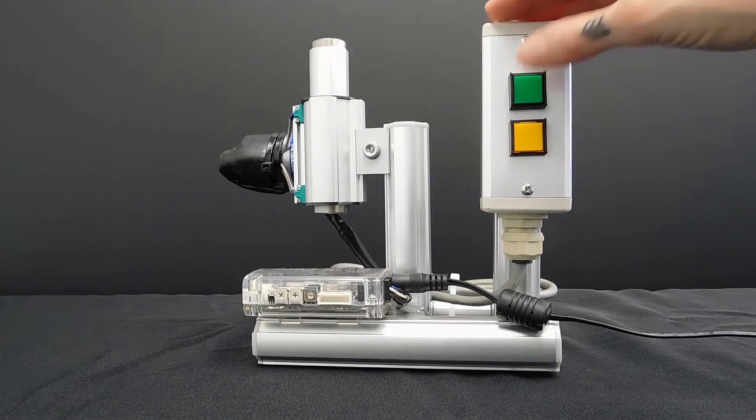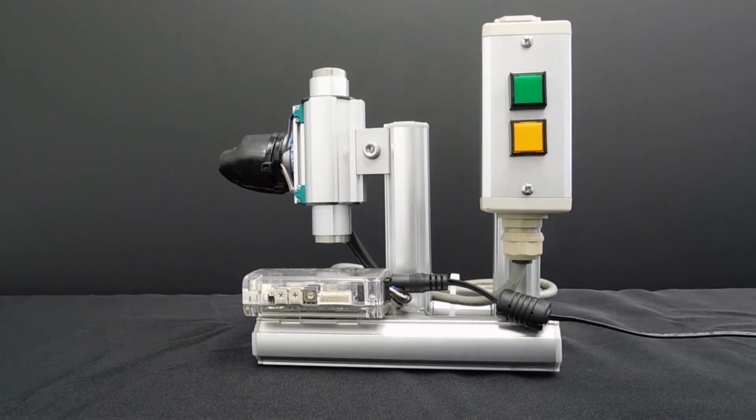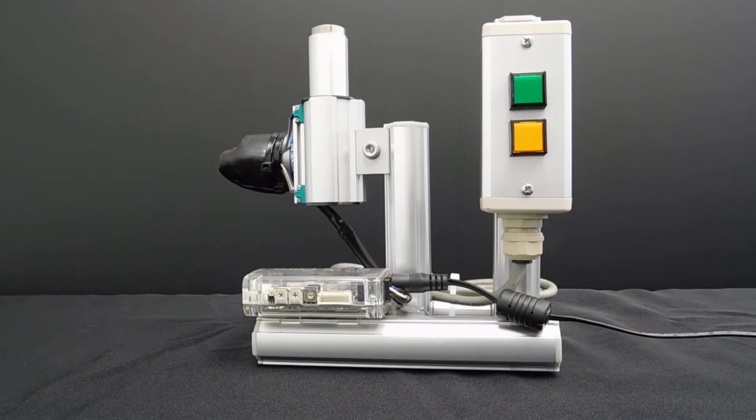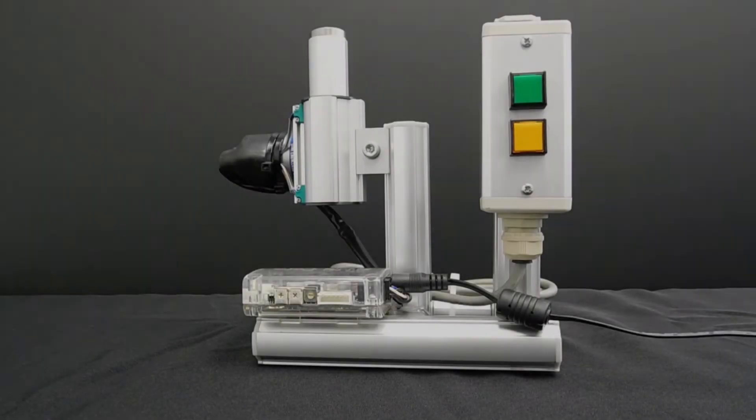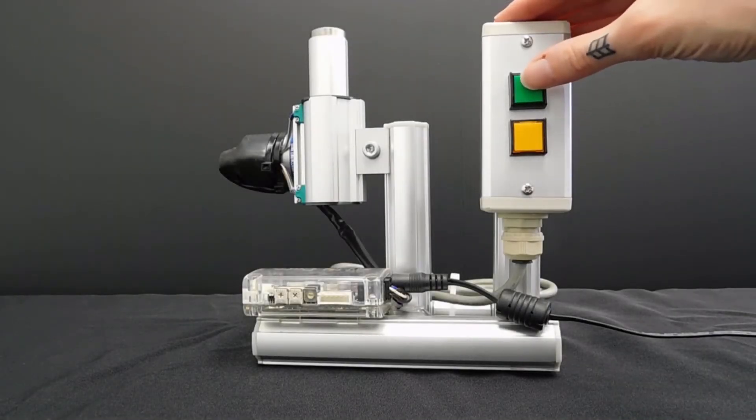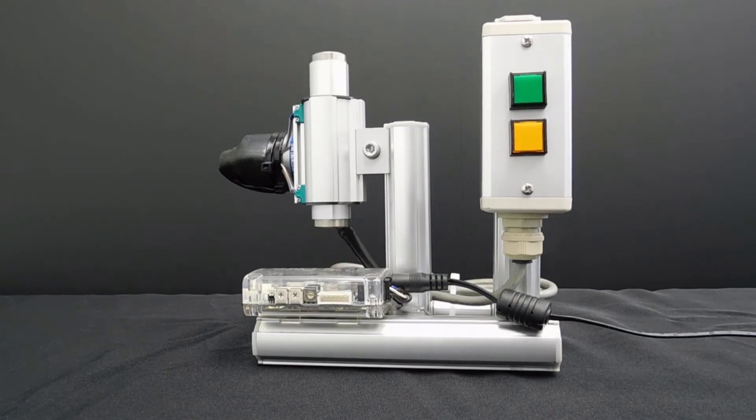You can also control the speed of each motion. For example, you can set the electric stopper to slowly release a tote and then snap back into place. You can also set the electric stopper to quickly release a tote and then slowly return to its original position.